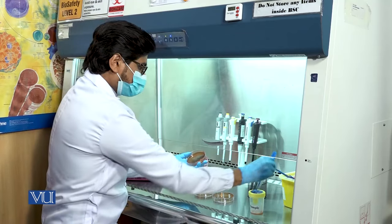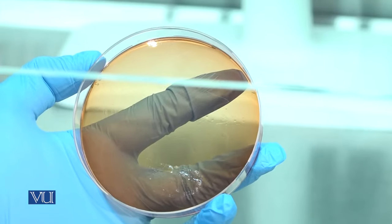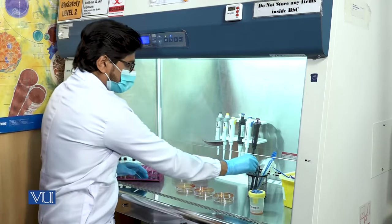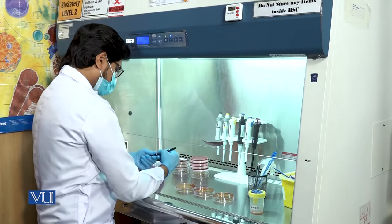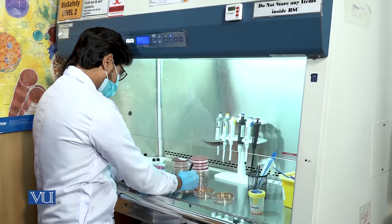Discard the inoculating loop after use. Place the petri plate in inverted position. Using a marker label your petri plate with necessary details including date.